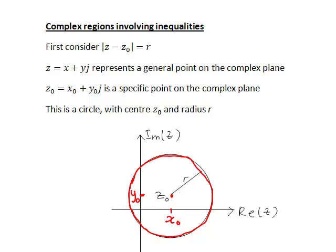But what happens if instead of |z - z₀| = r, we have an inequality sign instead of an equal sign?